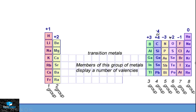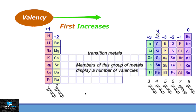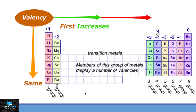All these negative and positive charges that appear on elements are called valency. Looking at the periodic table, across the period, the valency of elements starts increasing from +1, +2, +3, +4, and then starts decreasing like −3, −2, and −1. Going down the group, all elements in that specific group will have the same type of charge, so valency does not change down the group.